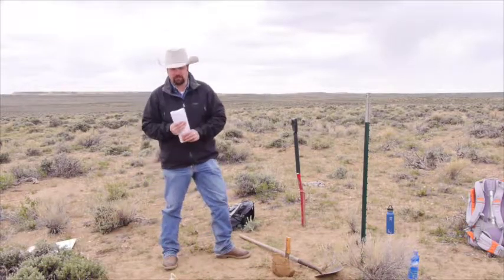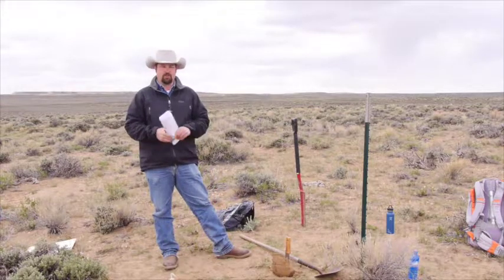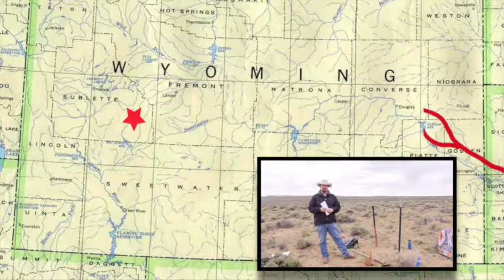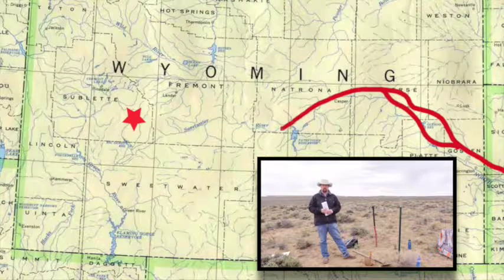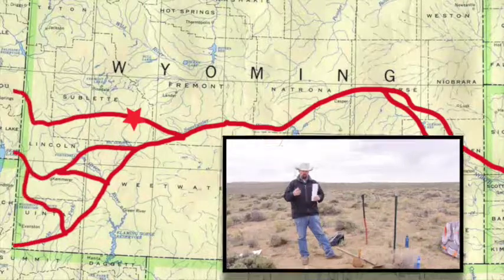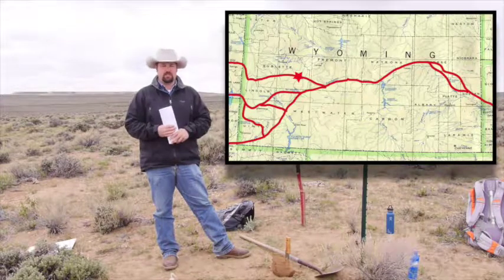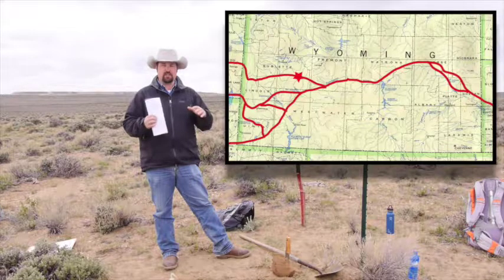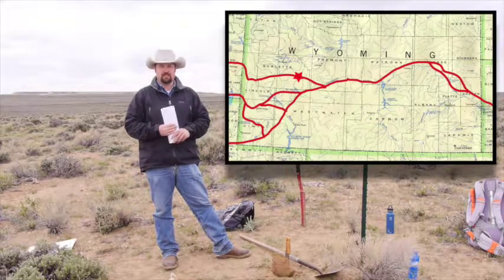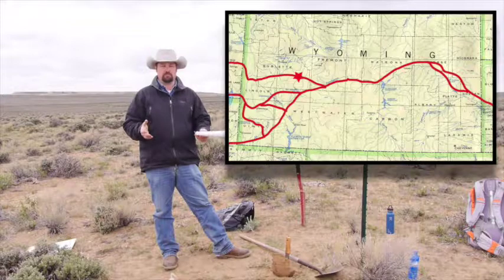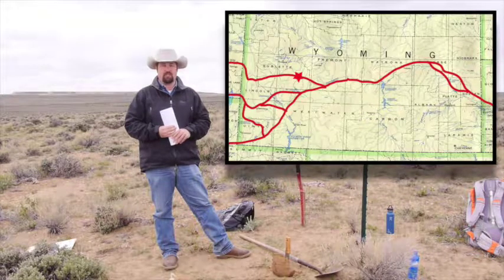Being this close to the Oregon Trail, historical documents show that there were up to two and a half million to five million different classes of livestock that moved through here, and most of them moved through over a five to six year period. Historical accounts show they traveled up to five miles either side of the trail to find forage to feed the livestock and horses they were using to cross this country.